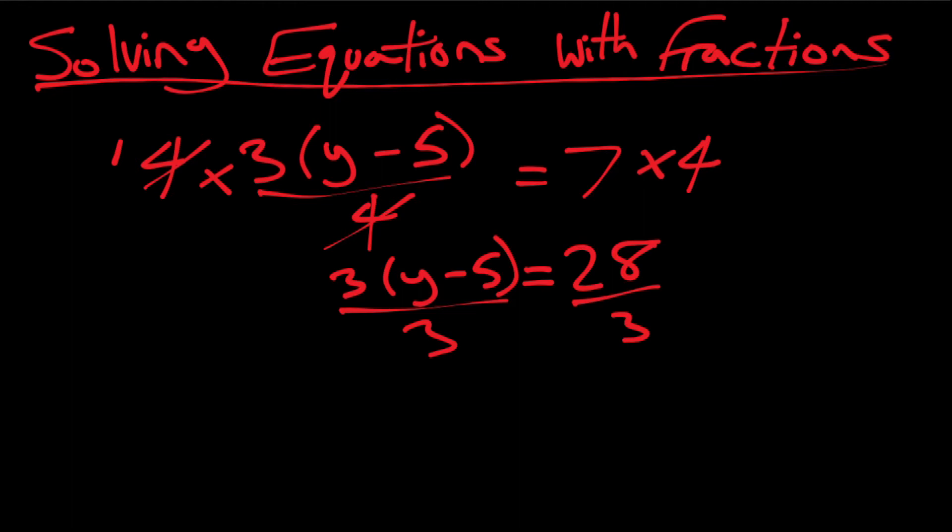So that leaves me with 28 over three, which is not a pretty number, but I'll take it. So now I'm left with y minus five equals 28 over three. Now if I'm subtracting by five on the side, I have to add five to isolate y.